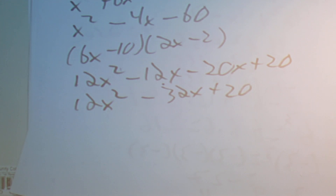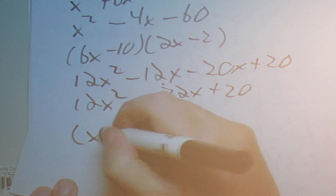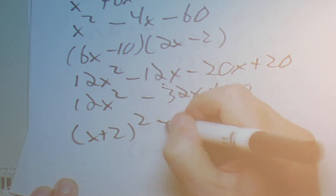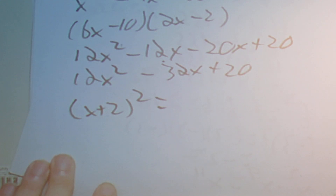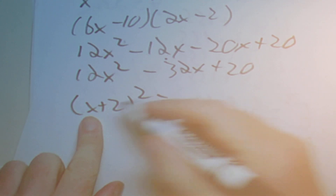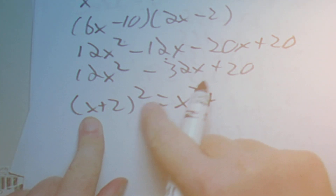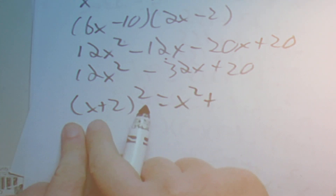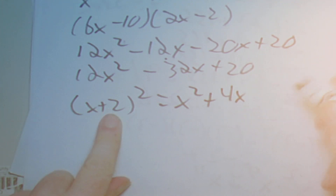Next we're going to square a binomial: x plus 2 squared. You can do this as FOIL or use the shortcut. Using the shortcut: the first term squared is x squared, plus 2 times 2 times x is 4x, and 2 squared is 4. So the answer is x squared plus 4x plus 4.